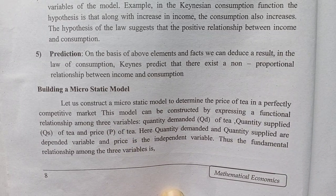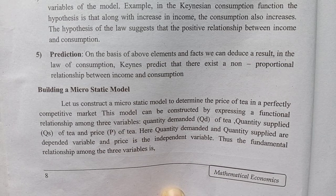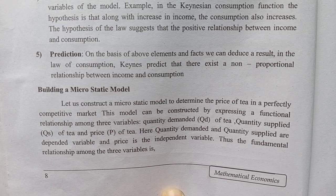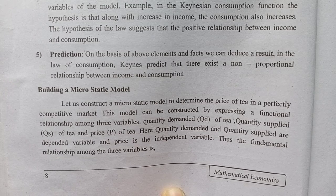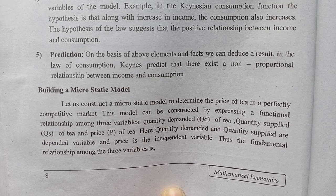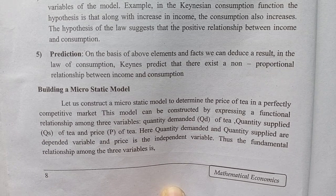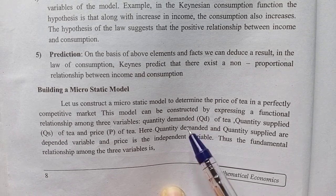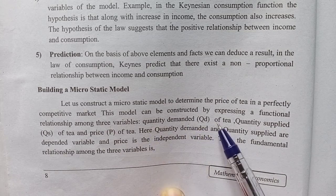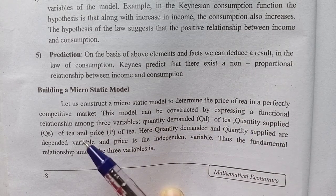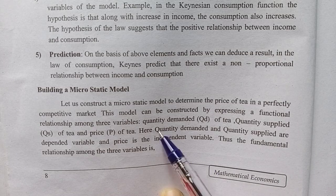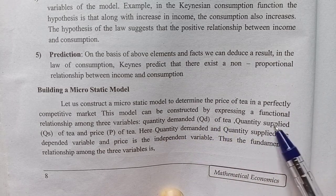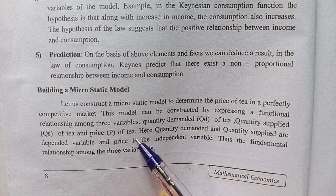We are talking about the model by expressing a functional relationship among three variables. The three variables are: quantity demanded of T, quantity supplied of T, and price of T.